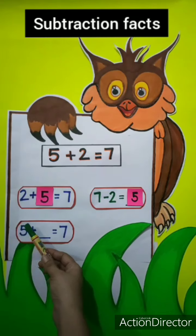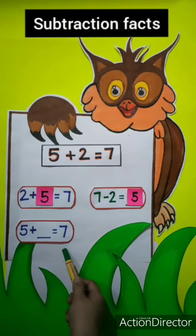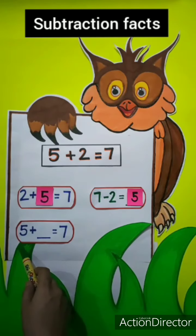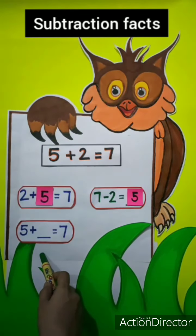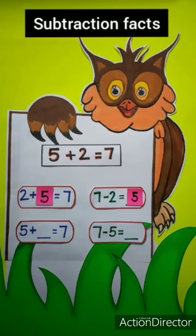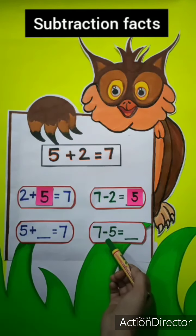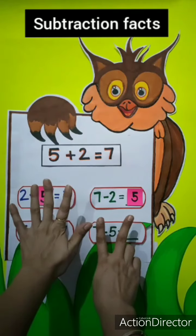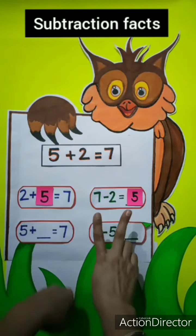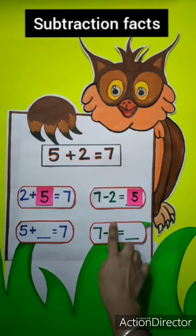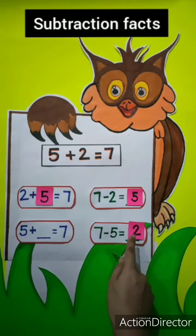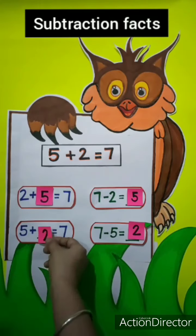Now suppose only 5 — the addend — and the sum 7 is given. Now you tell me what you have to do to get the missing addend. We subtract 5 from 7 to get the missing addend. So this is 7 minus 5. These are 7 fingers. Count 5: 1, 2, 3, 4, 5. How many are left? Only 2. So we will write 2 here. 2 is the missing addend.